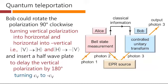So Bob is implementing a controlled unitary transform here, and his choice of that unitary transform is determined by the classical information that Alice sent over to him of the result of her Bell state measurement of the state of these two photons. Now, she doesn't actually know the state of photon 1, but she knows that this pair of photons was in a particular Bell state.